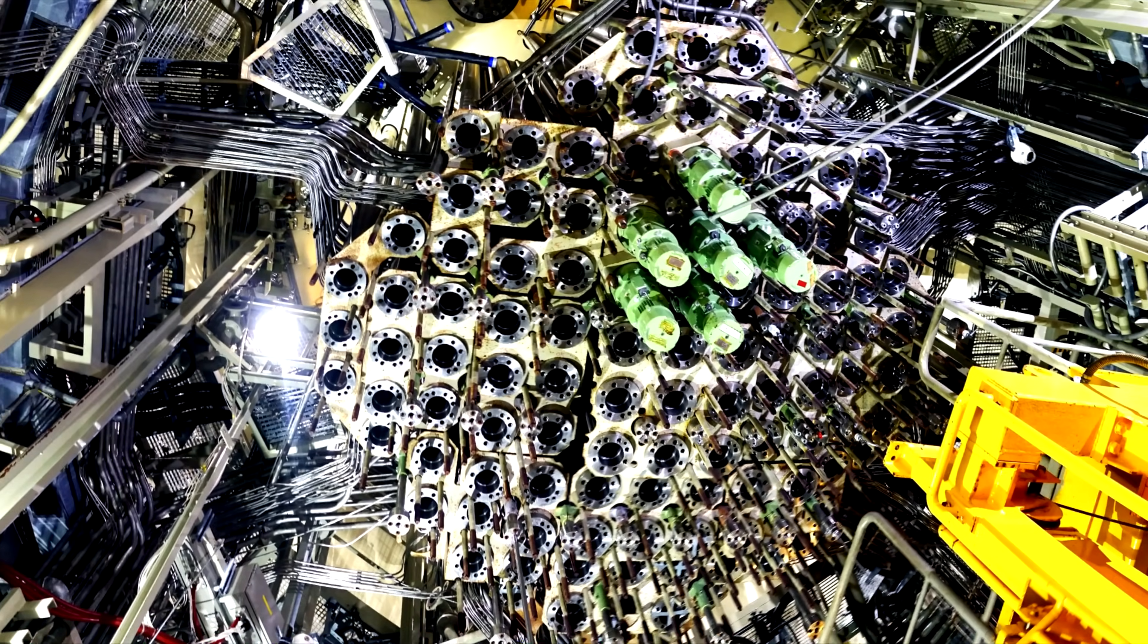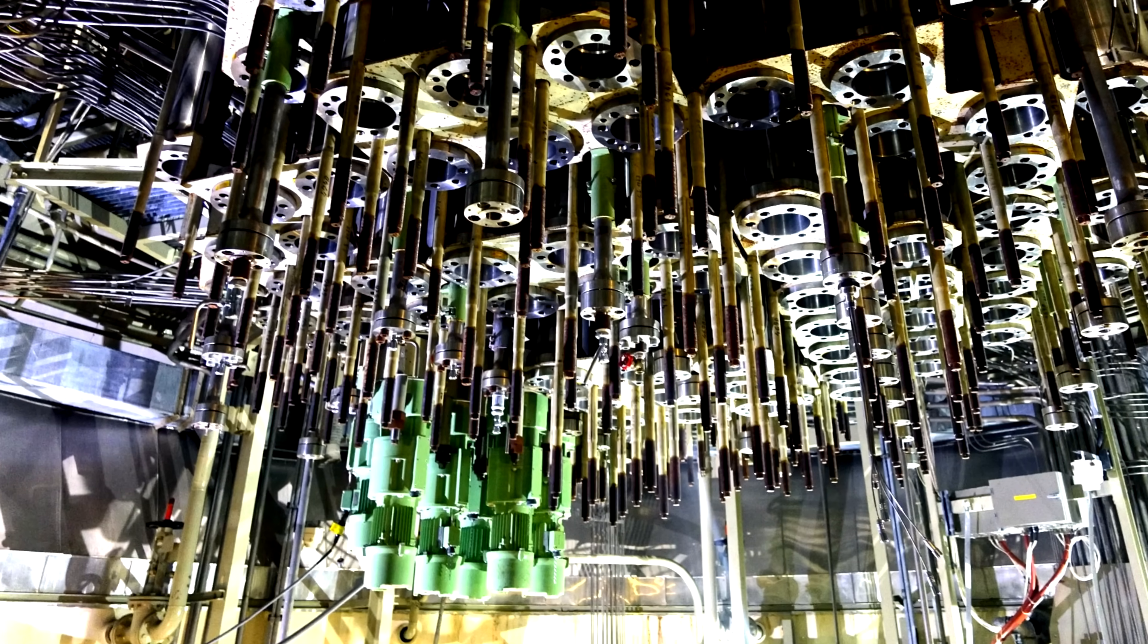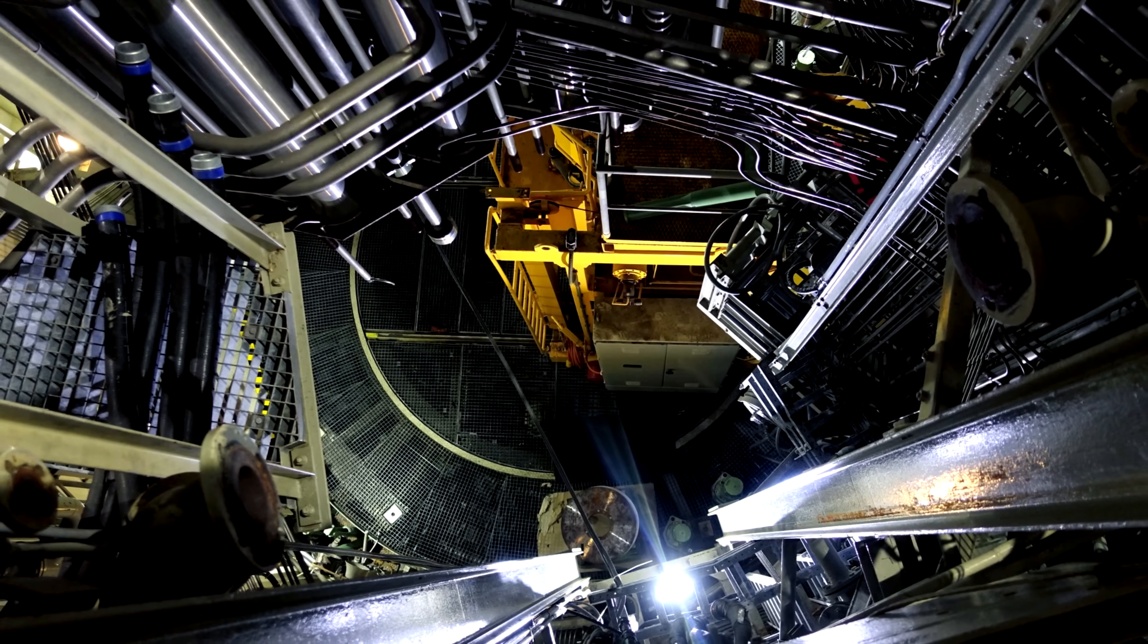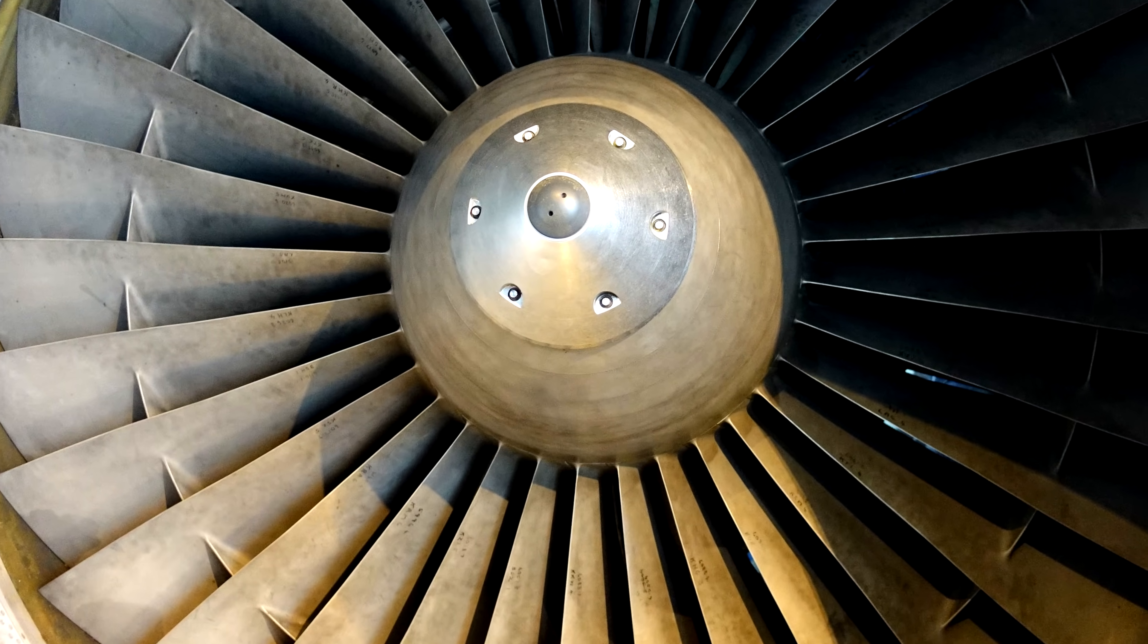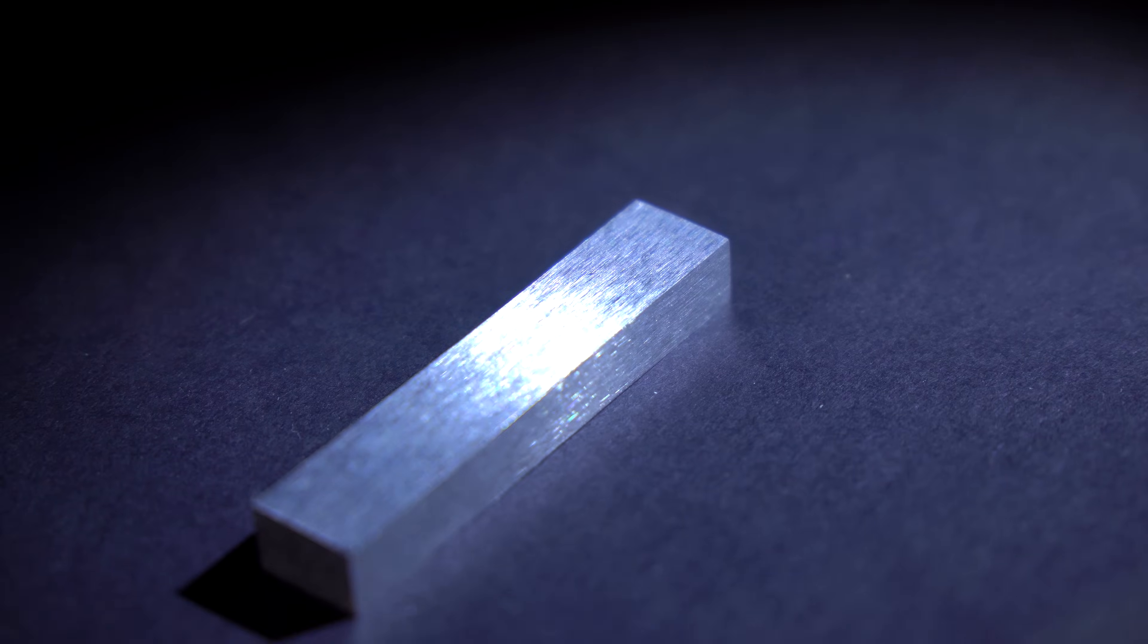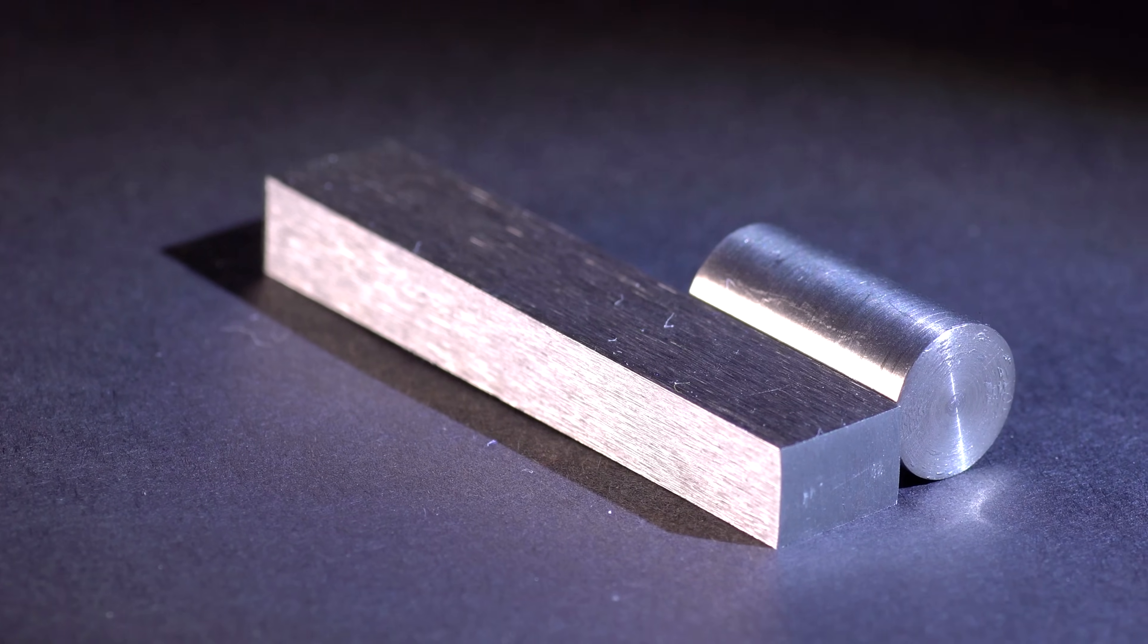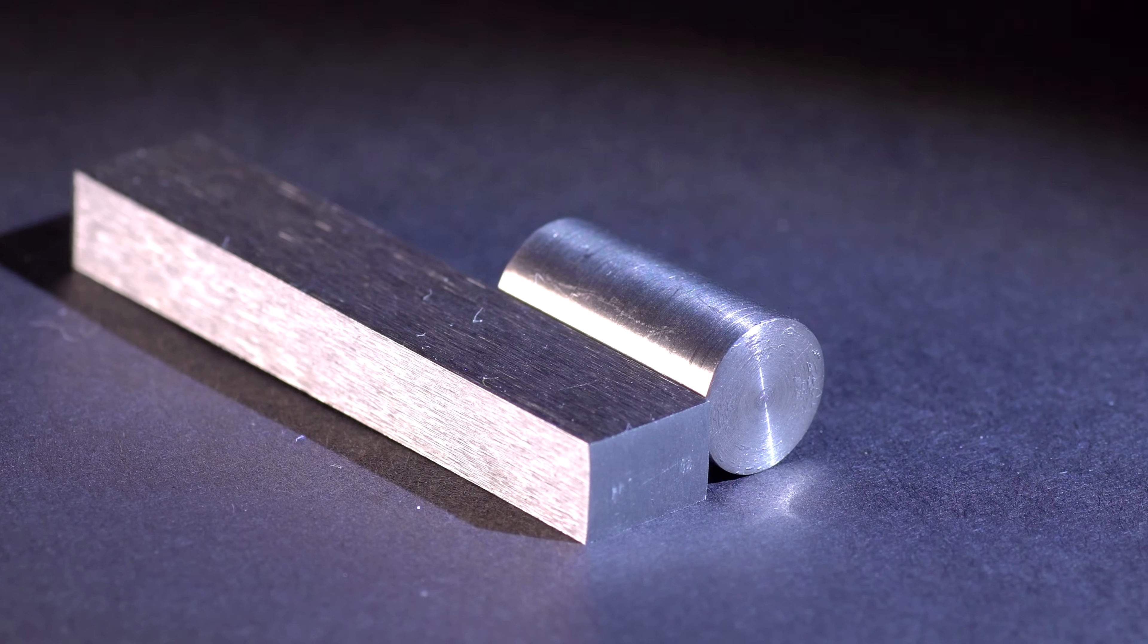Nowadays, hafnium is mainly used for manufacturing control rods in some nuclear reactors, mostly research and military models though. This metal is also added to heat-resistant alloys, for instance to those used to manufacture rocket engine nozzles. It's quite expensive to use hafnium for other purposes. That is why whenever possible, it is substituted by the cheaper zirconium.